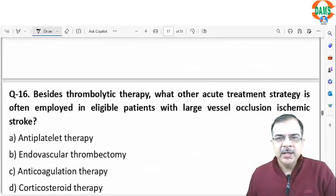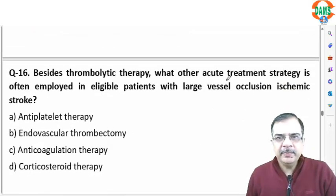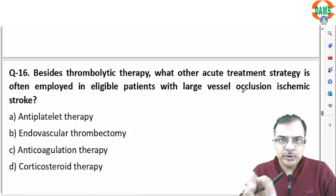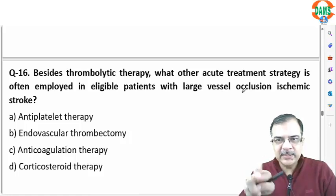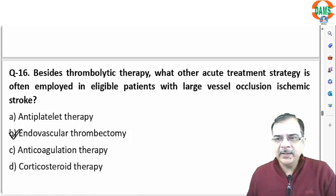Question 16: besides thrombolytic therapy, in the acute management of eligible patients with large vessel occlusion ischemic stroke, a procedure where the endovascular thrombus is removed is performed. This is known as endovascular thrombectomy.